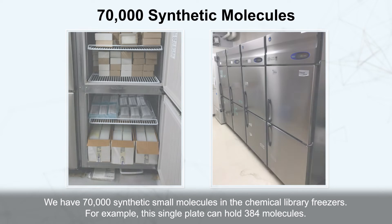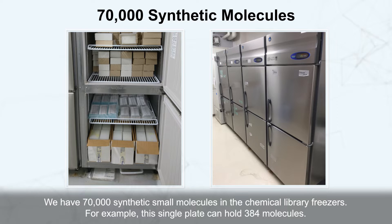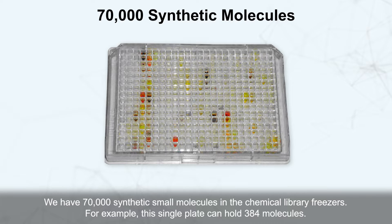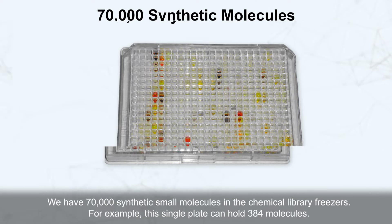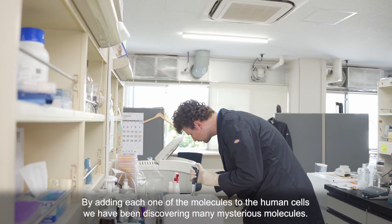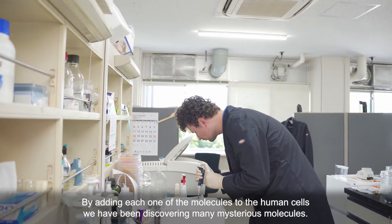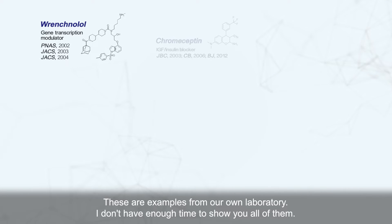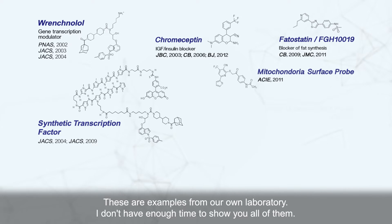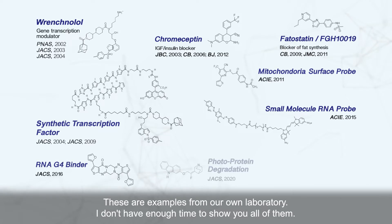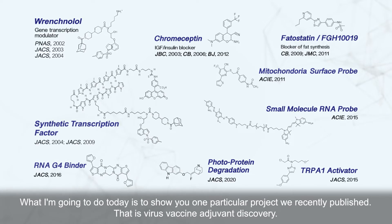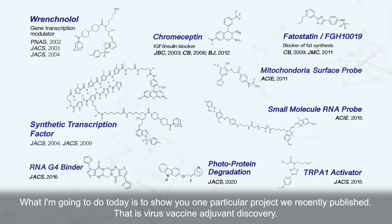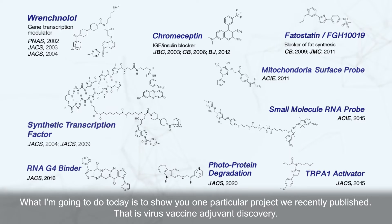We have 70,000 synthetic small molecules in the chemical library freezers. For example, this single plate can hold 384 molecules. By adding each one of the molecules to human cells, we have been discovering many mysterious molecules. What I'm going to do today is show you one particular project we recently published — virus vaccine adjuvant discovery.